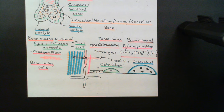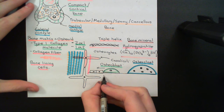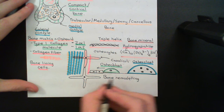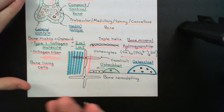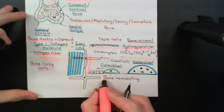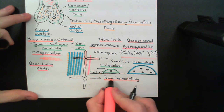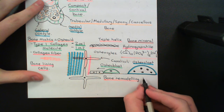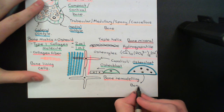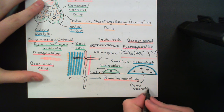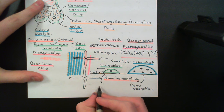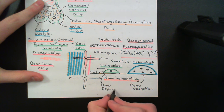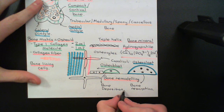Osteoblasts and osteoclasts take part in the process known as bone remodelling, which occurs continuously even in the adult. Bone remodelling involves the breakdown of bone and then its replacement. Osteoclasts are the ones which break bone down — their function is bone resorption. Osteoblasts are the ones which deposit bone back — their function is bone deposition.